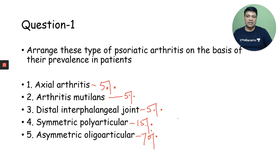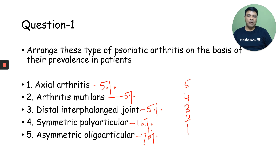So the answer will be 5, 4, 3, 2, 1. All of 1, 2, and 3 are 5%, so it can be in any order among these three. But the majority, or the most common, is asymmetrical oligoarticular.